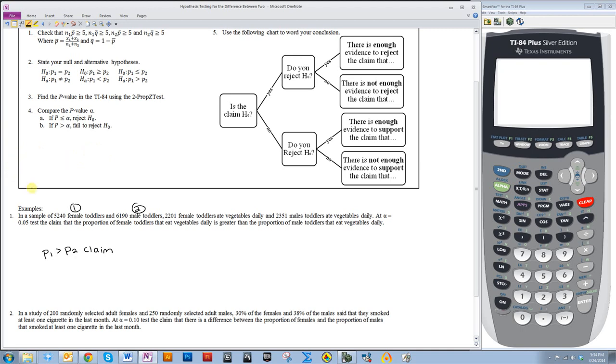So if p1 is greater than p2 is my claim, then that is HA, the alternative hypothesis. Now the opposite of that will be my null hypothesis. Since this is greater than, this will be a less than and will include an equality symbol.